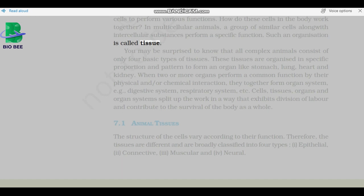You may be surprised to know that all complex animals consist of only four basic types of tissues. These tissues are organized in specific proportion and pattern to form an organ like stomach, lung, heart, and kidney. When two or more organs perform a common function by their physical and or chemical interaction, they together form organ system, e.g. digestive system, respiratory system, etc.